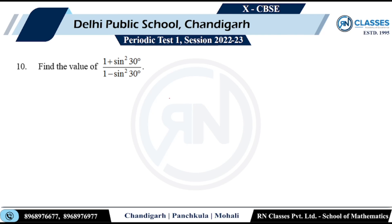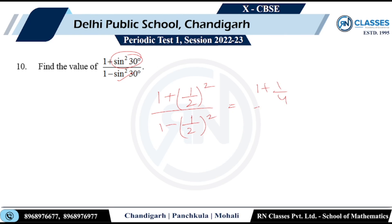Question 11: Find the value of (1 + sin²30°) / (1 − sin²30°). Sin 30° = 1/2, so sin²30° = 1/4. The expression becomes (1 + 1/4) / (1 − 1/4) = (5/4) / (3/4) = 5/3.